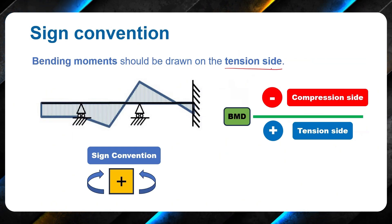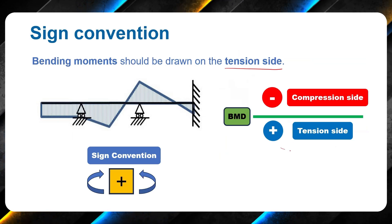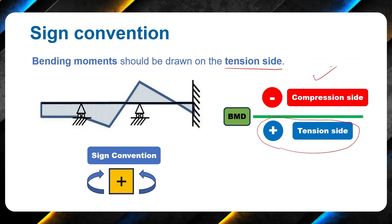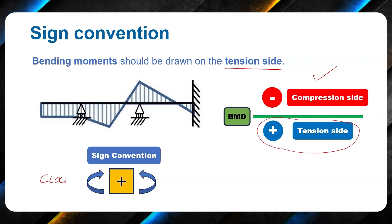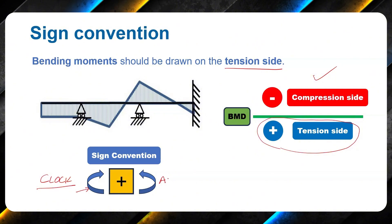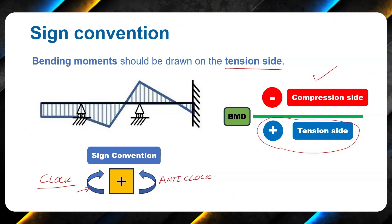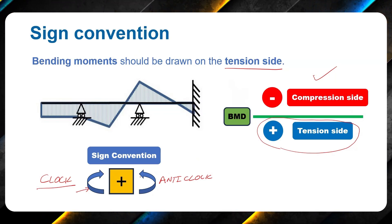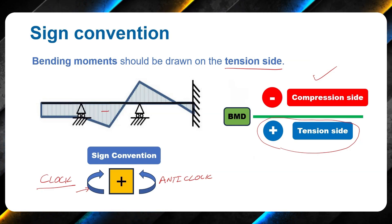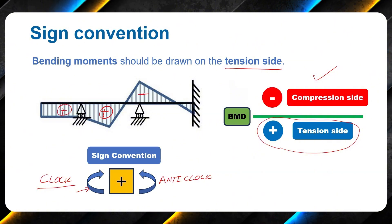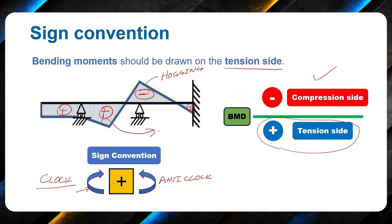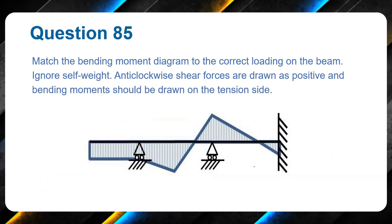The sign convention for the bending moment diagram is that it is drawn on the tension side. The tension side is below the baseline, treated as positive. Clockwise moments from the left side and anti-clockwise moments from the right side are treated as positive — these generate sagging. Above the baseline we have negative or hogging, and below we have sagging.